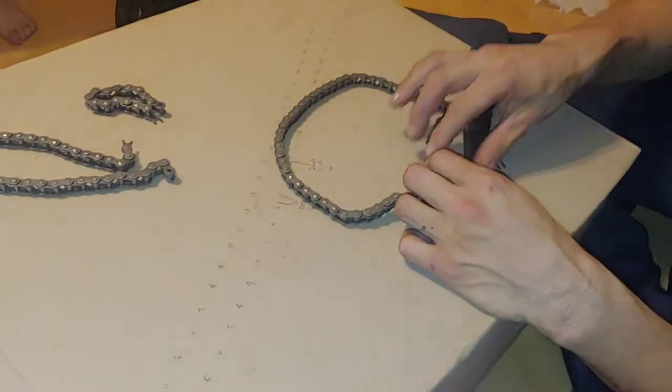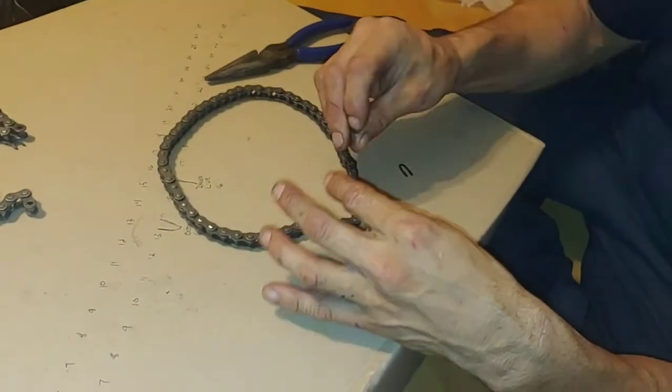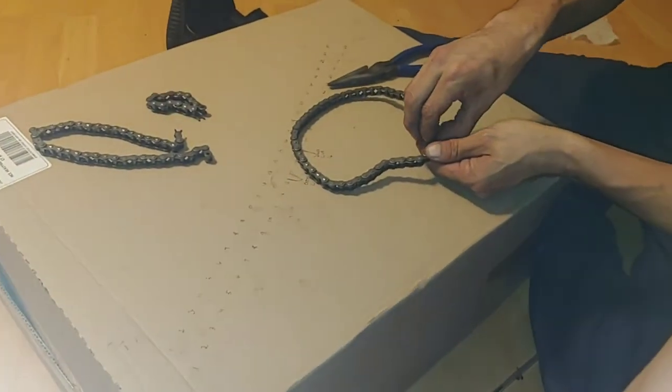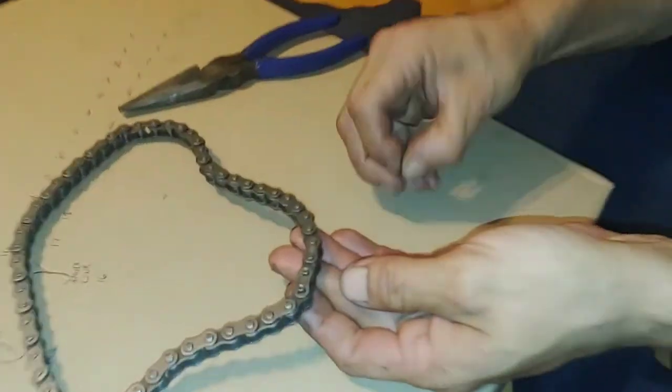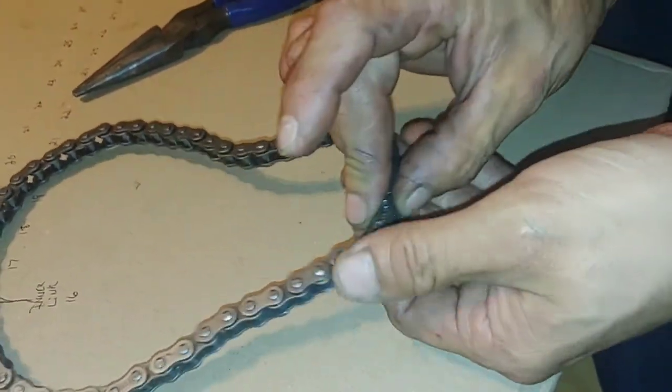Once you've got that, you get your chain, put your connector link through both sides, then you have this piece. Your link goes on like that. And then this is the tricky part here.